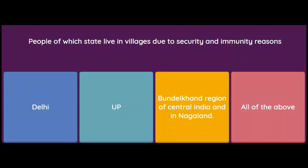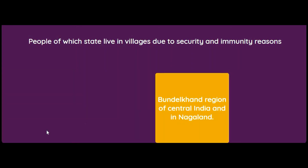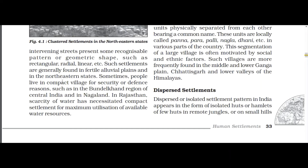People of which region live in compact villages due to security and defense reasons? Options: Delhi, UP, Bundelkhand region of central India and Nagaland, or all of the above. The answer is Bundelkhand region of central India and Nagaland. The book also mentions that in Rajasthan, people stay in compact settlements for maximum utilization of available water resources due to scarcity of water.